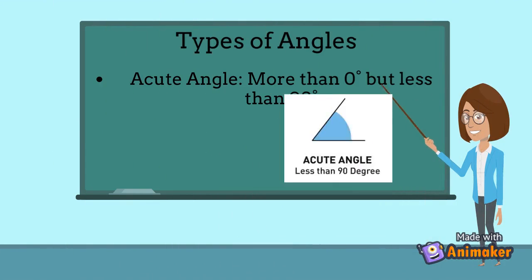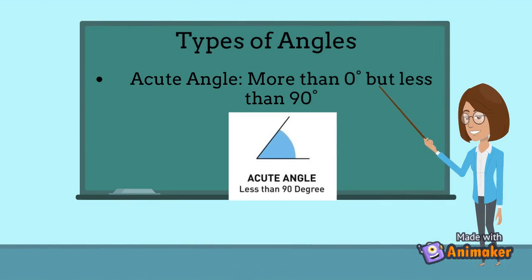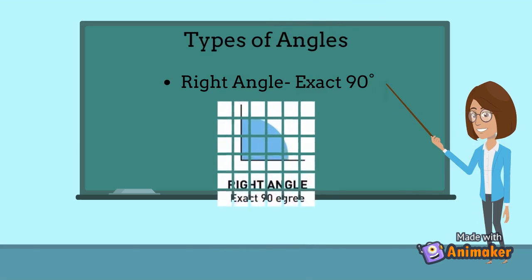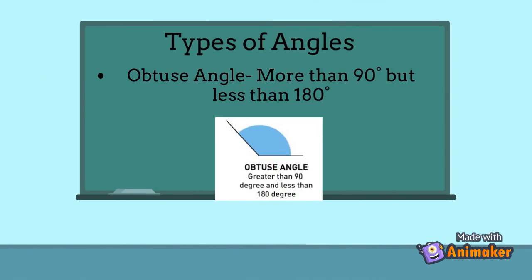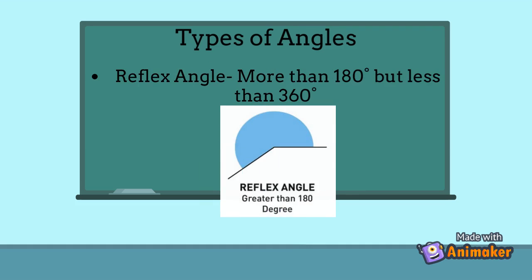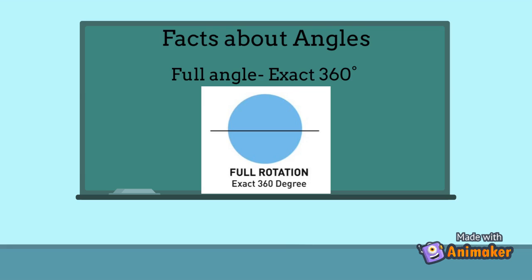Types of angles. Acute angle: more than 0 degrees but less than 90 degrees. Right angle: exactly 90 degrees. Obtuse angle: more than 90 degrees but less than 180 degrees. Straight angle: exactly 180 degrees. Reflex angle: more than 180 degrees but less than 360 degrees. Full angle: exactly 360 degrees.